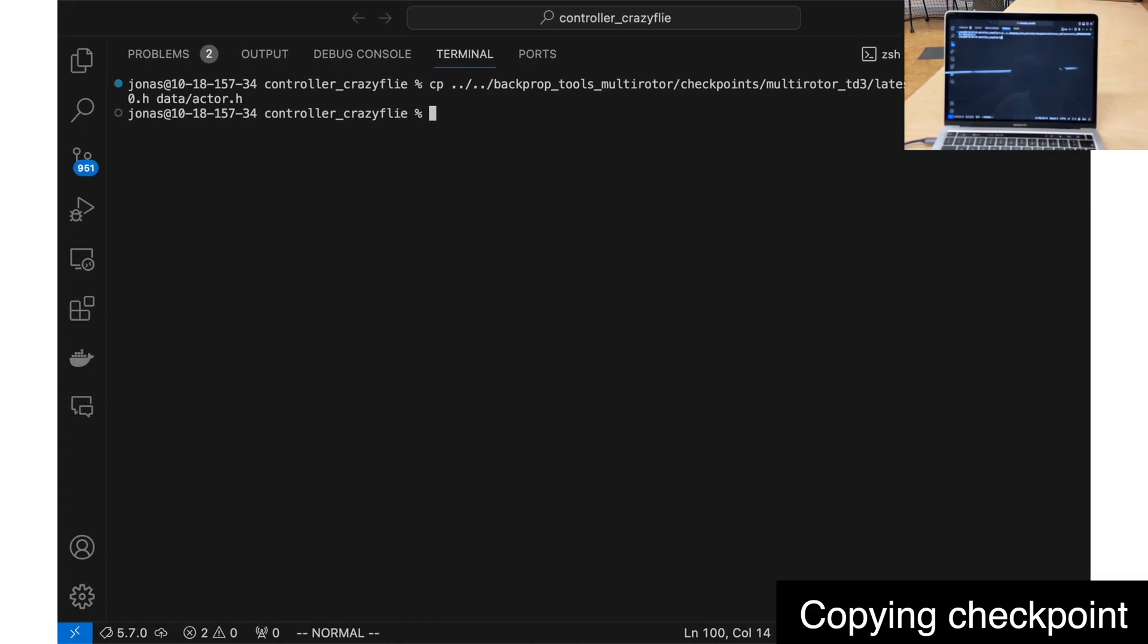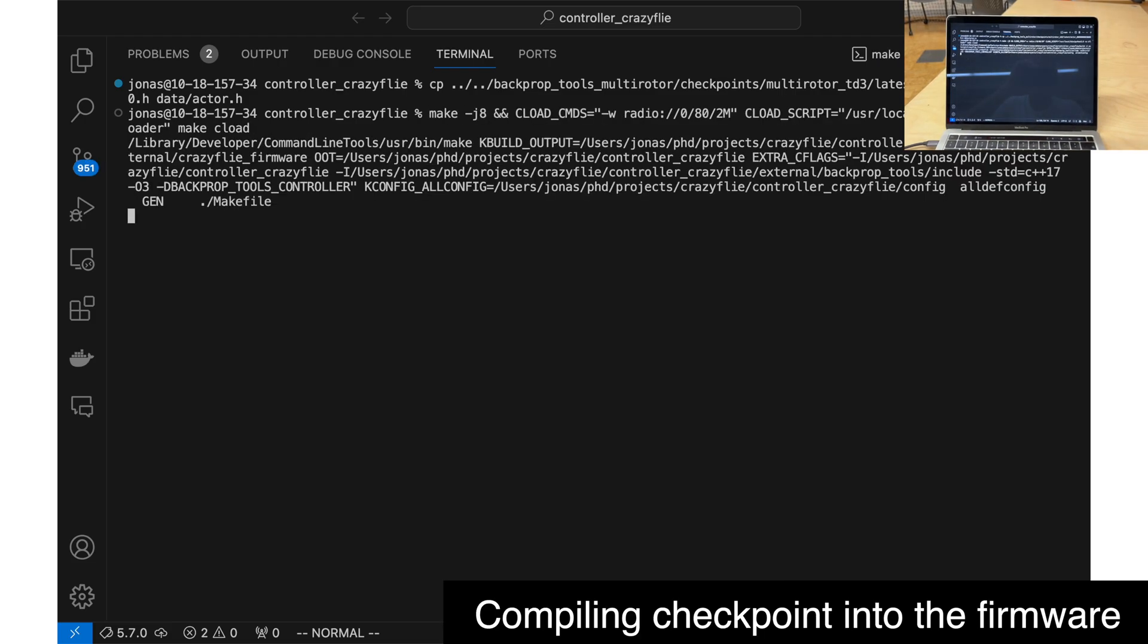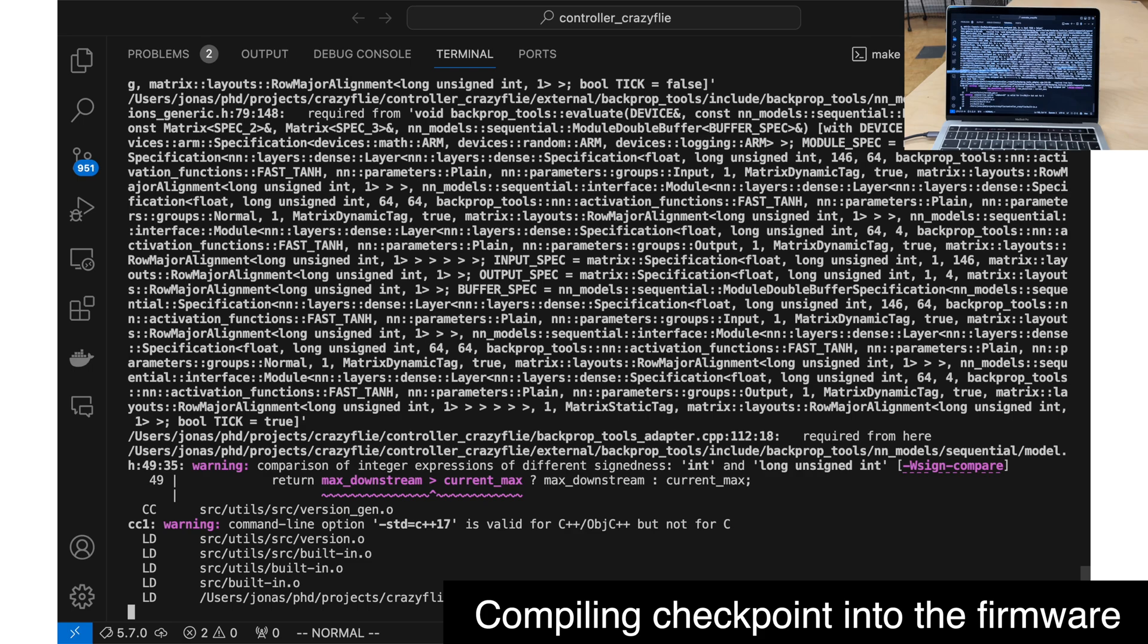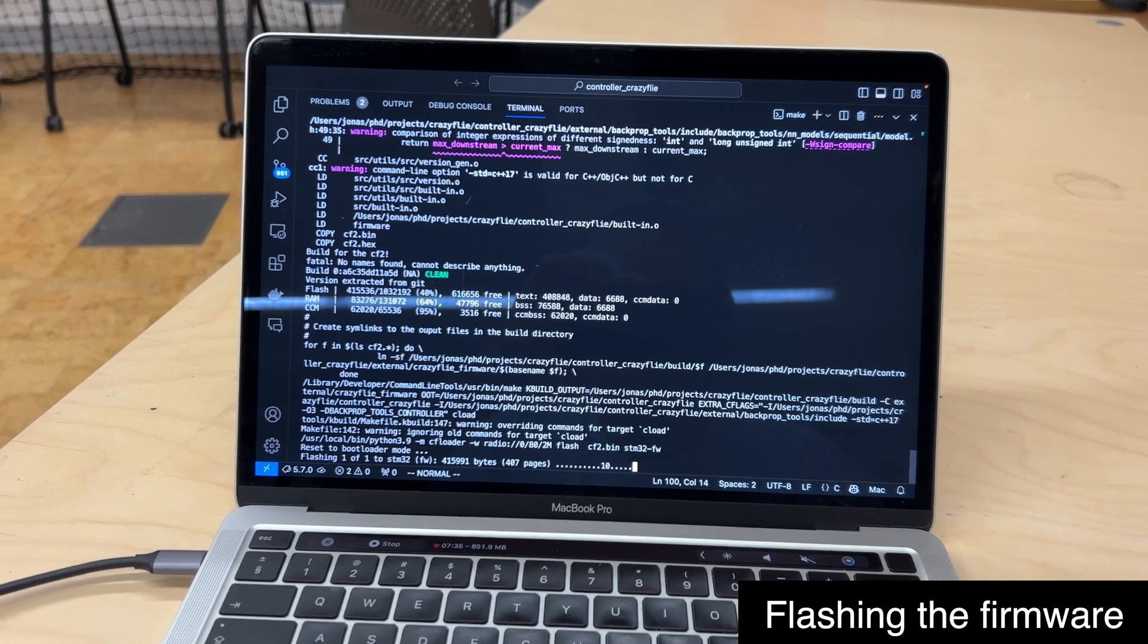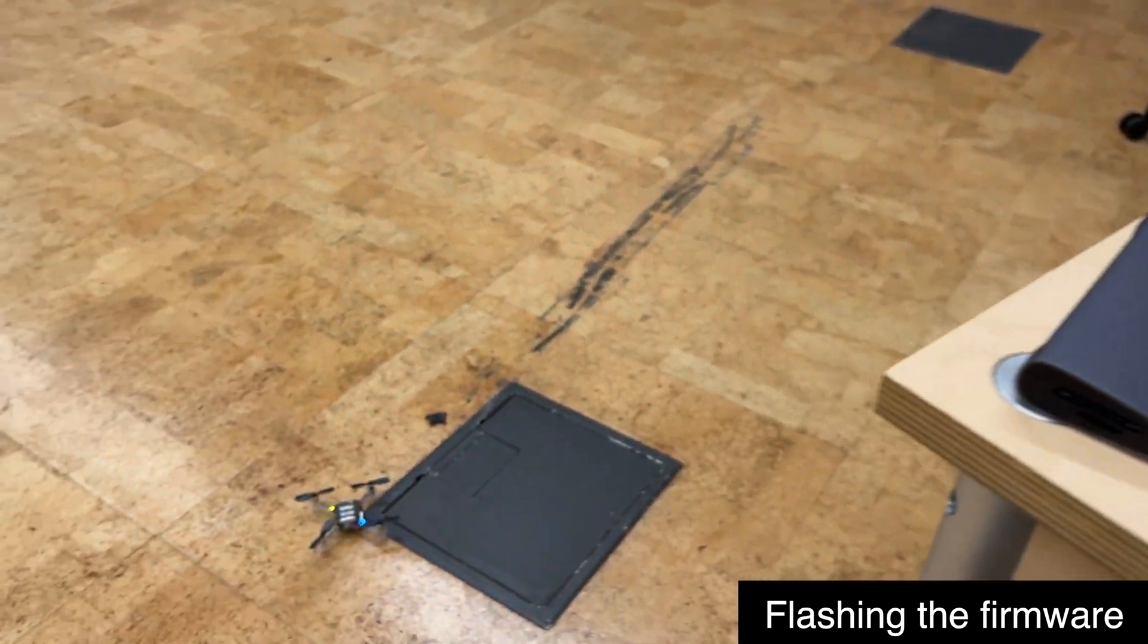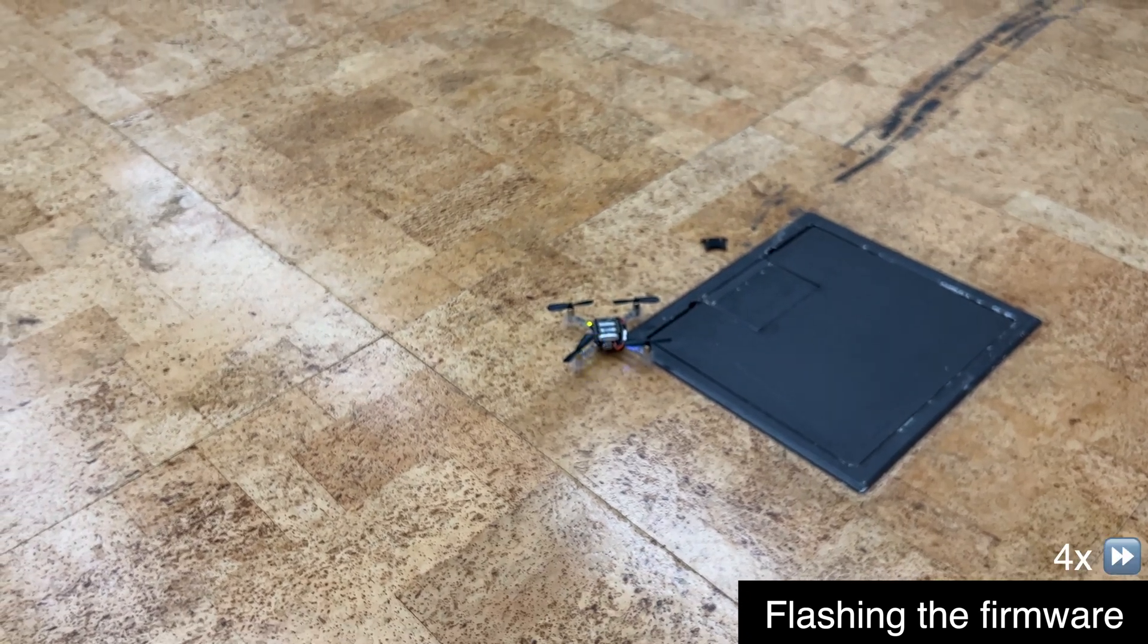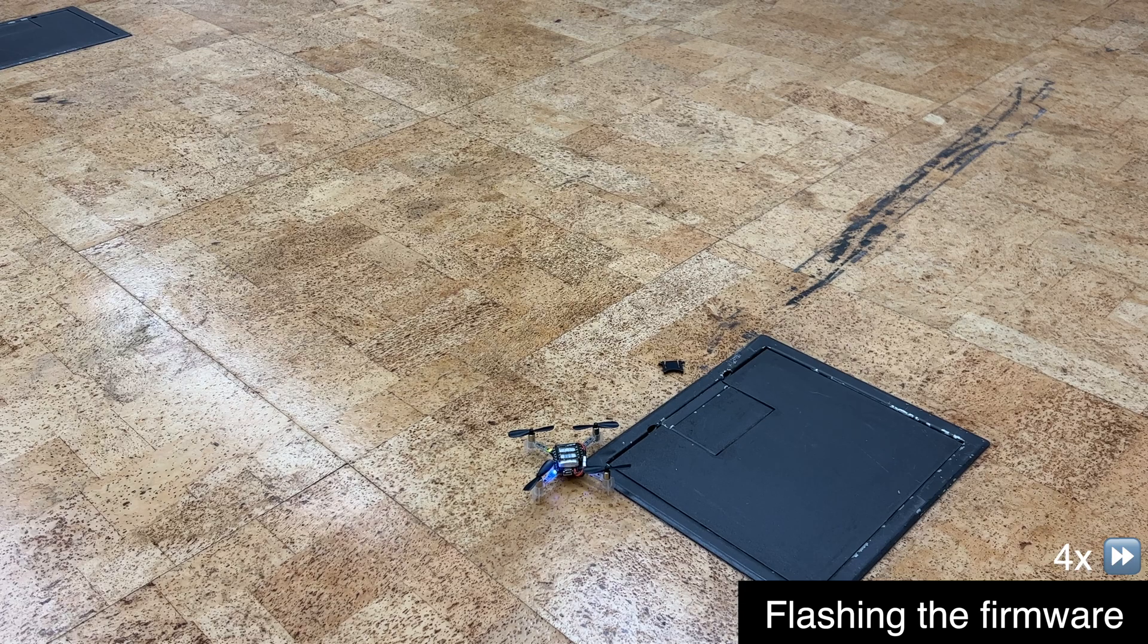After training we copied the weights of the policy into the firmware of the quadrotor, we then compile and flash the firmware onto the real Crazyfly. Interestingly, flashing the firmware takes far longer than the entire training process.